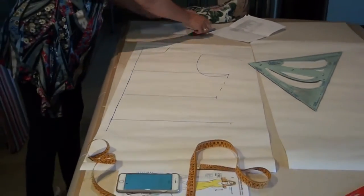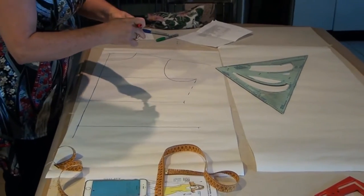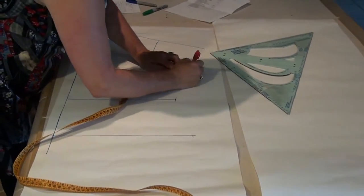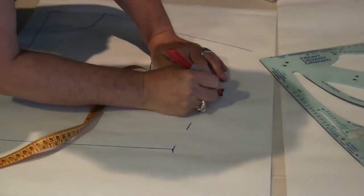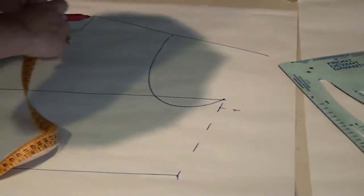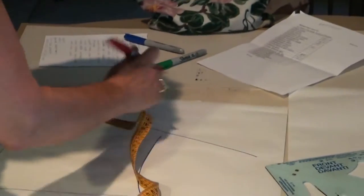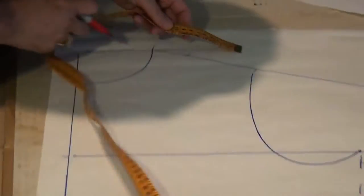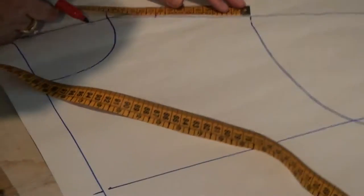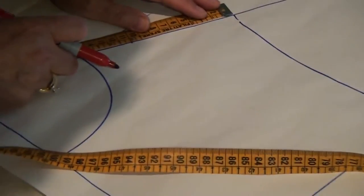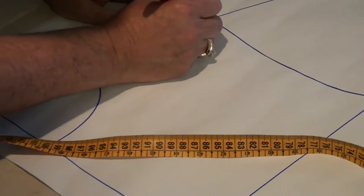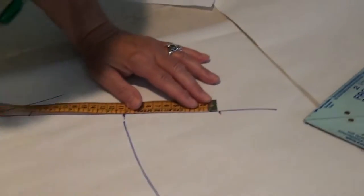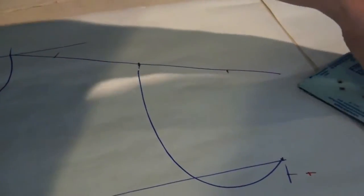I've done the basic block. Now I'm going to start the shaping. So the shaping starts like this. Down two, out two, in five. And the base dart is one-sixth of the half bust measurement. So I'm going to go with 10. So 10 and 10. Redraw the armhole.